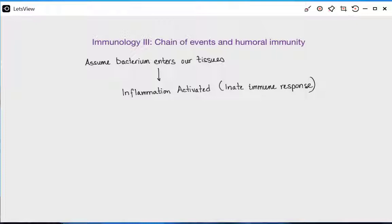The innate immune response is the nonspecific but rapid immune response we have towards all potential pathogens. It doesn't matter if it's bacteria of species A, species B, a worm, a virus, or COVID — you're going to have the same kind of response. The goal is simply to try to eat the problem before it gets too big. The end game of inflammation is to contain and solve the problem right then and there, and to bring out our phagocytes.